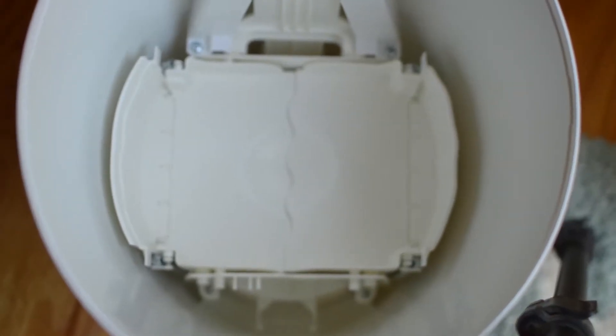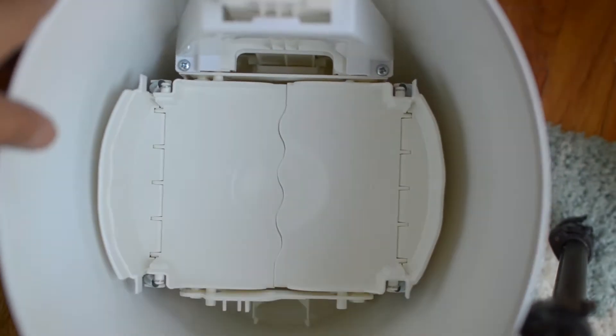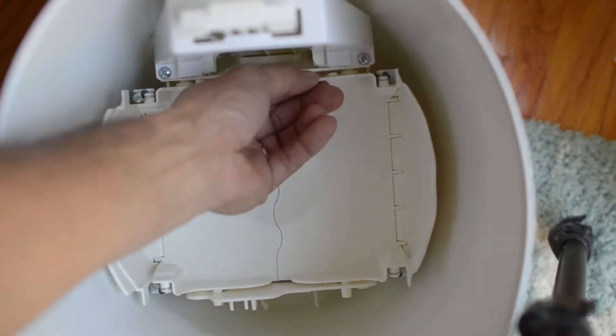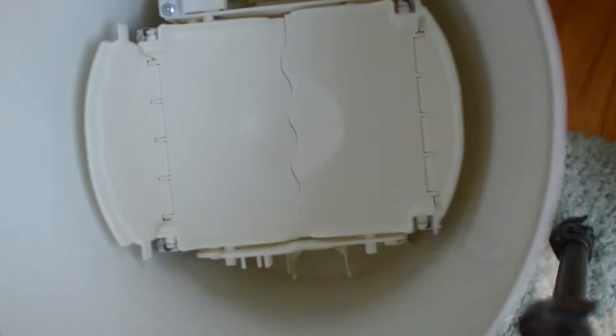First, open up your Diaper Genie like you're going to empty out the bag. There are six screws you're going to remove, the two that are holding the lever in place and the four that secure the flap assembly to the lid.